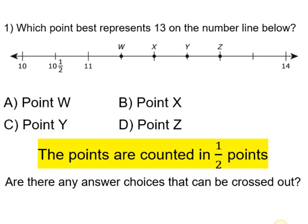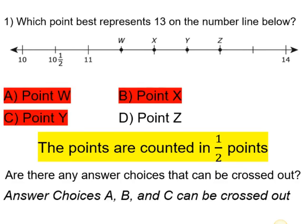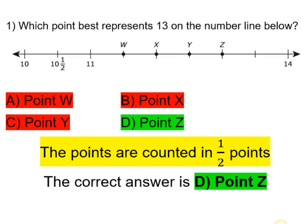Are there any answer choices we can cross out? If you said A, B, and C, you are correct. W would be 11 and a half, X would be 12, Y would be 12 and a half, Z would be 13. The next hash mark would be 13 and a half, and then we would end with 14. So our correct answer is D, point Z.